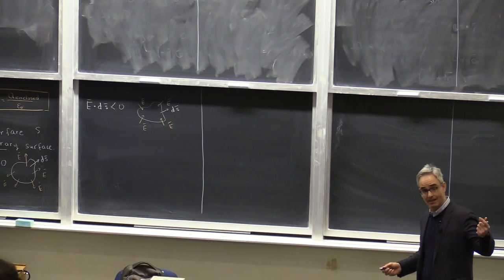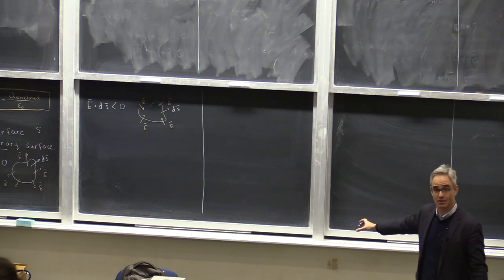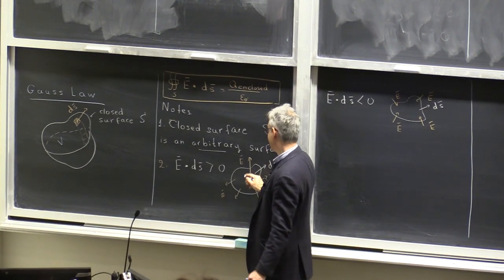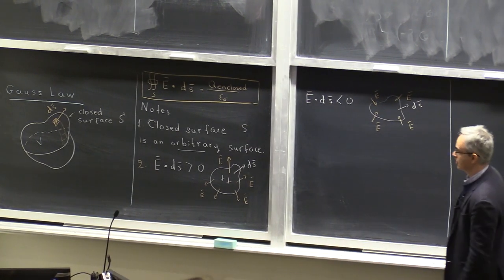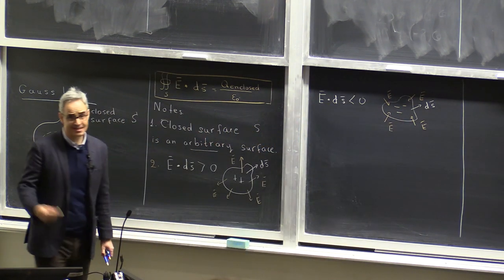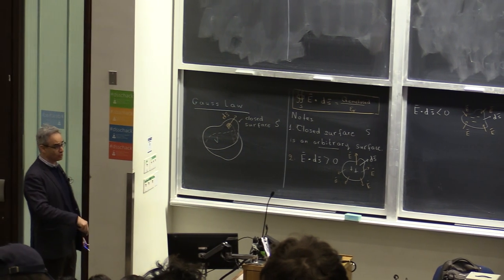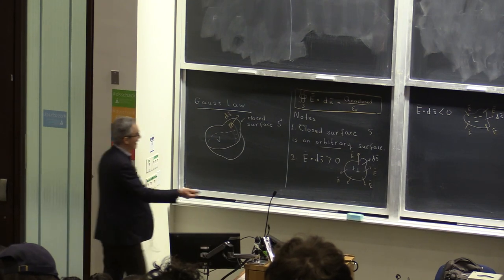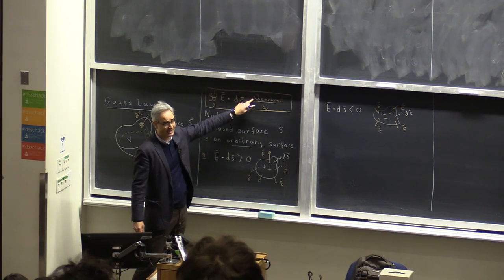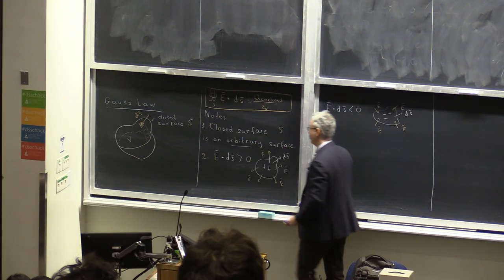So this reminds us of sources and sinks. When E dot dS is positive, the left-hand side is positive, so the right-hand side is positive, meaning the enclosed charge is overall positive. Gauss's law says: if the surface integral is positive, you have positive charges inside; if it is negative, you have negative charges inside. This is a restatement of the fundamental observable of electricity — which became Coulomb's law and then the definition of the electric field — that positive charges are sources of electric field lines and negative charges are sinks of electric field lines.